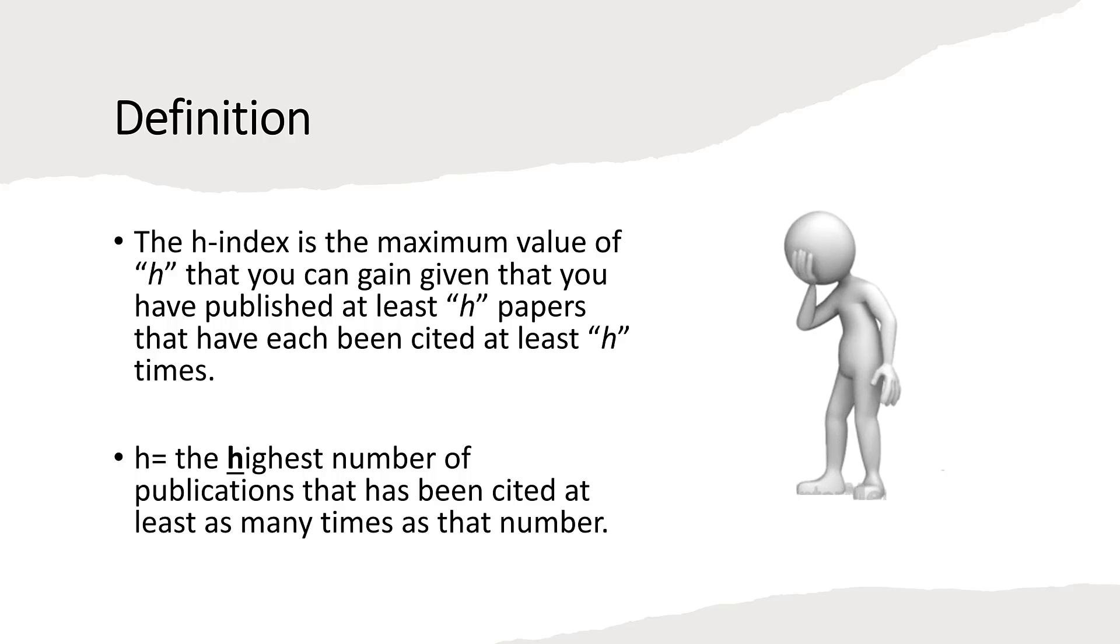We can define the H-Index as the maximum value of H that you can gain given that you have published at least H papers that have been each cited at least H times. Or we can say that H is the highest number of publications that has been cited at least as many times as that number. This is actually more simple than it sounds, and I think it will become clear when we look at a few examples on how it is calculated.